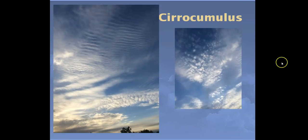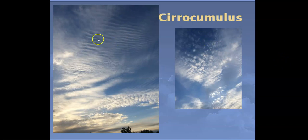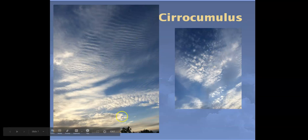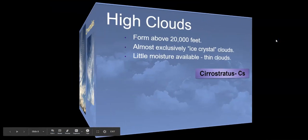Here's another image of cirrocumulus clouds. You might notice the entire sky doesn't look the same because there are multiple types of clouds present. Generally when we see a whole bunch of high clouds, those are cirrocumulus clouds — there are the rows and the little fish scales — but we've also got some lower level clouds visible too.